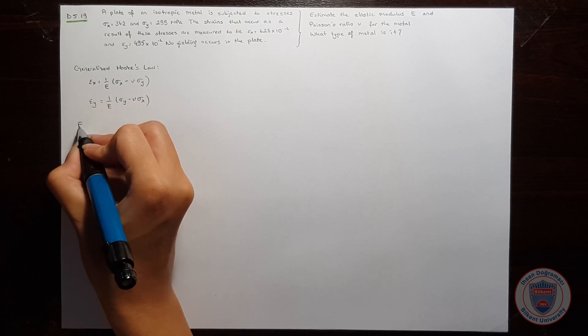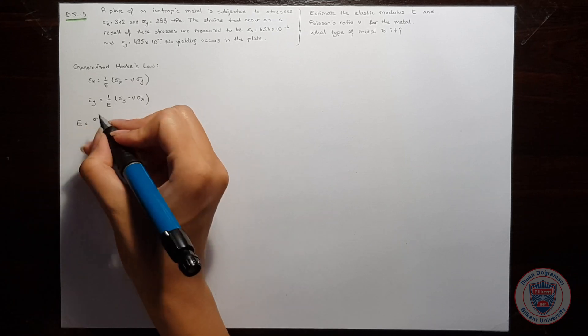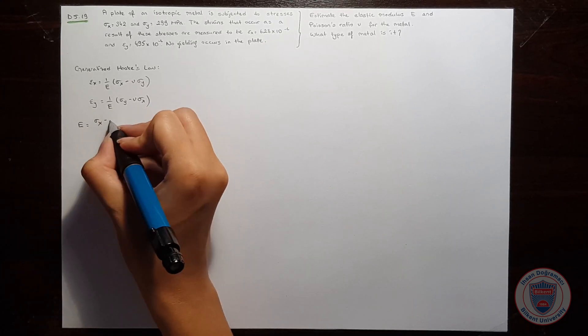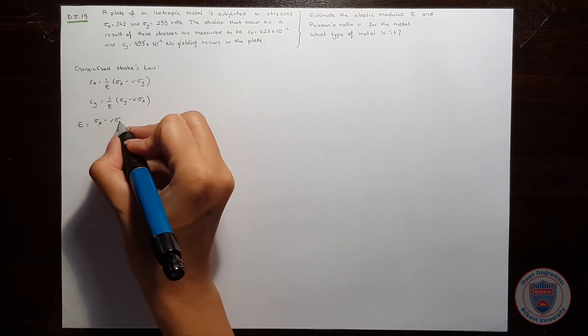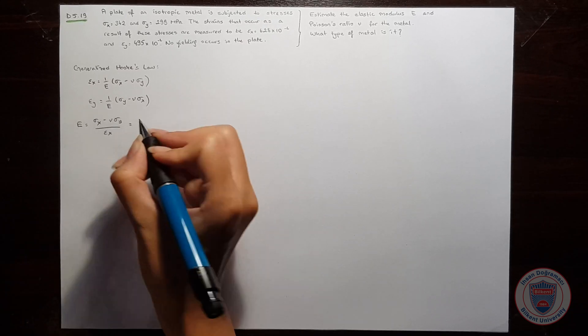The equation for Young's modulus is straightforward. We know that it is equal to σx minus Poisson's ratio times σy, all divided by εx.